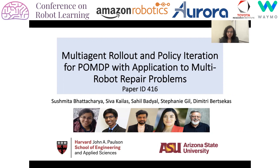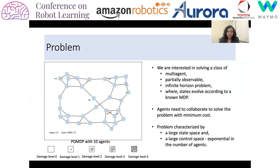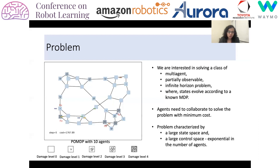We are interested in solving a class of partially observable multi-agent infinite horizon problems where states evolve according to a known Markov chain. Agents need to collaborate among each other to solve the problem in minimum cost. The problem is characterized by a large state space and a large control space which grows exponentially with the number of agents. On the left hand side you can see a group of robots moving to different physical locations in order to service the damaged locations, which can evolve according to a known Markov chain. The objective of the agents is to perform the repair action as soon as possible.